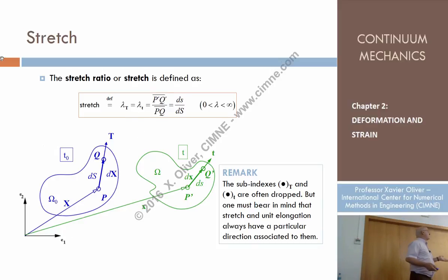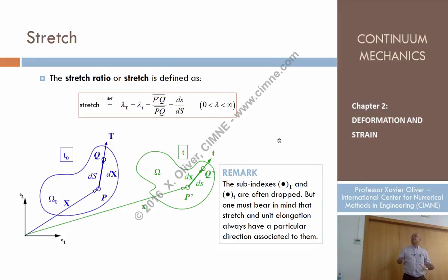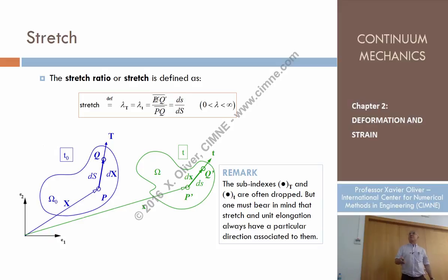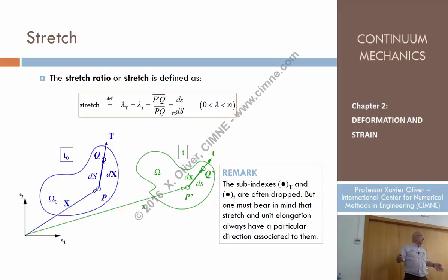Let's investigate the range in which the stretches live. What happens if, by some means, these two particles have been so compressed that differential of s is equal to zero? In that case, the stretch would be zero. On the other hand, the other limit is when the original distance differential of capital S refers to two particles very close in the reference configuration that become a differential s which is much larger — so the other limit is infinity. The stretches are always positive values, because they always refer to distances, and they range between zero and infinity.